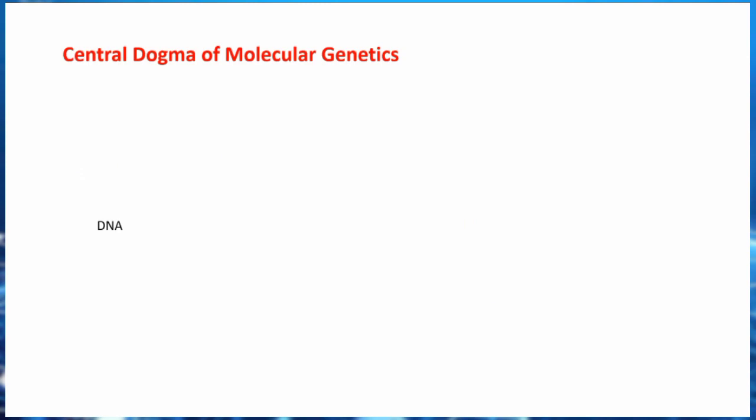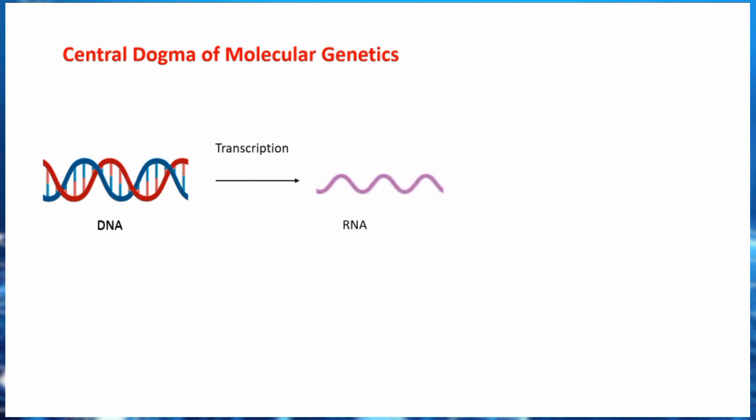Studies in molecular genetics are centered on the central dogma of molecular genetics. The central dogma is simply about understanding how genetic information passes from DNA all the way to gene action. Starting from DNA, transcription produces RNA, and then the information in RNA is translated into proteins. It is worth noting that certain genes are expressed only in the form of RNA and do not need to be translated into proteins.